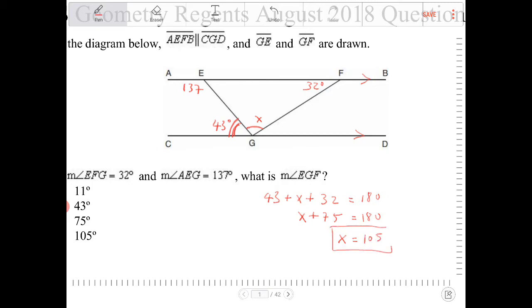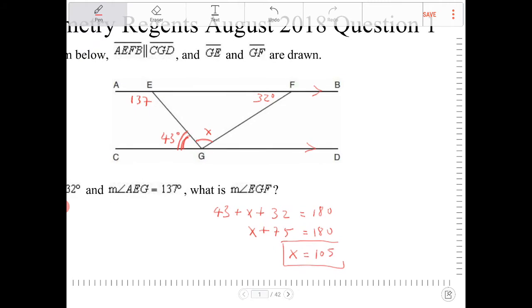So this is not the only way that we can actually get to angle EGF. Alternatively, we can also figure out what this angle over here is, that 137 is supplementary to, because this angle here and 137 forms a linear pair.